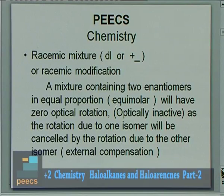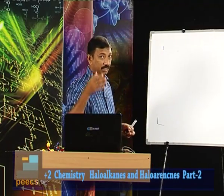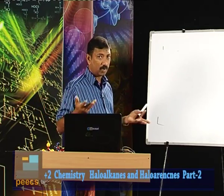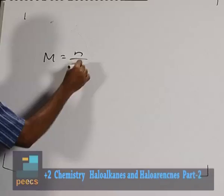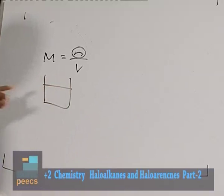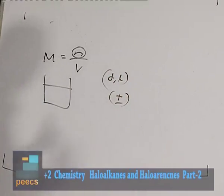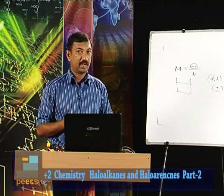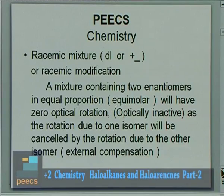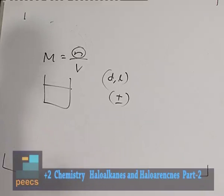A racemic mixture is an equimolar mixture of dextro and levo isomers and is found to be optically inactive. Equimolar means the number of molecules must be equal — for example, 1000 dextro molecules and 1000 levo molecules. The mixture is then a racemic mixture (d,l). Such a mixture is optically inactive because of external compensation: the dextro isomers rotate plane polarized light 10° to the right and the levo isomers rotate by the same degree to the left — they cancel out. This is called external compensation.